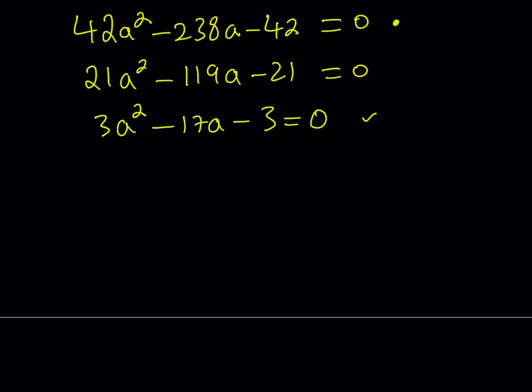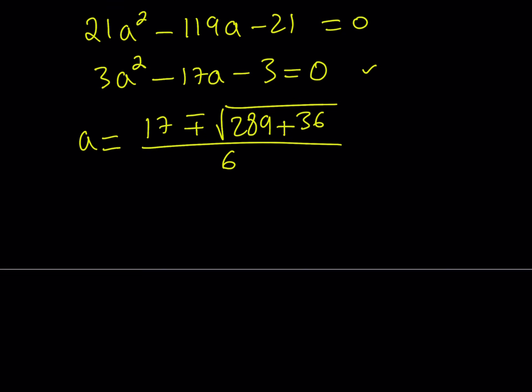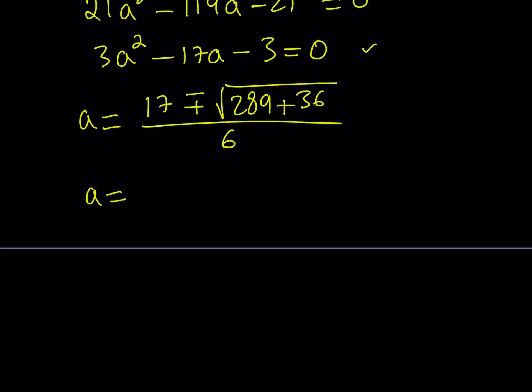From here we can find the values of a by using the quadratic formula. a is going to be negative b, which is 17, plus minus the square root of b squared, which is 289, minus 4ac, but there's a negative sign so double negative. 4 times 3 is 12, times 3 is 36. So that's 289 plus 36, divided by 6. 289 plus 36 should equal 325.